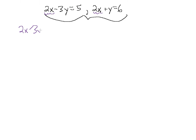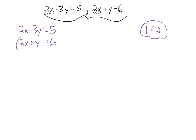So we have 2x minus 3y equals 5. This works very similar to elimination by addition. What we're going to do is place parentheses around the second equation — 2x plus y equals 6 — and subtract it. We're subtracting the entire equation so we don't get our signs mixed up. When subtracting, I like to add a negative, because subtracting a positive is the same thing as adding a negative.